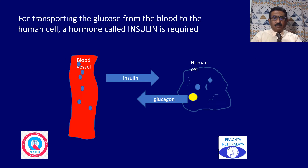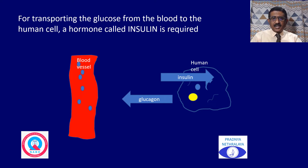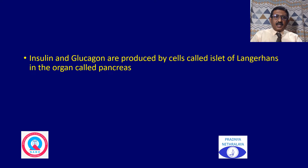There is a hormone called insulin which helps in transporting glucose from the blood vessels into the human cells. There is another hormone called glucagon which helps in transporting glucose from the human cells into the blood vessels. Insulin and glucagon are produced by cells called the islets of Langerhans in the organ called the pancreas.